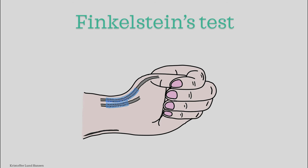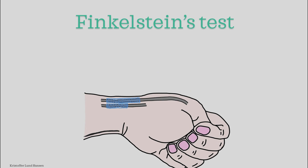After making the fist with the thumb held inside, the next step is to grab the hand and adduct the wrist — that is, moving the wrist in this direction. This will cause the tendons of the abductor pollicis longus and the extensor pollicis brevis to be stretched out. If this stretching causes pain in the general area shown, then we have a positive Finkelstein's test. A positive Finkelstein's test combined with the typical symptoms is sufficient to diagnose De Quervain's tenosynovitis.